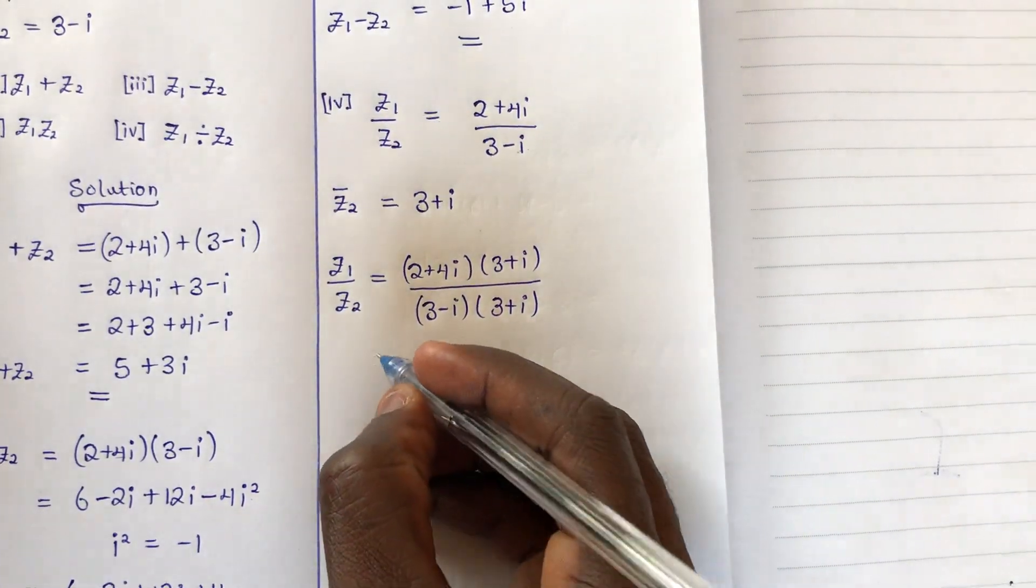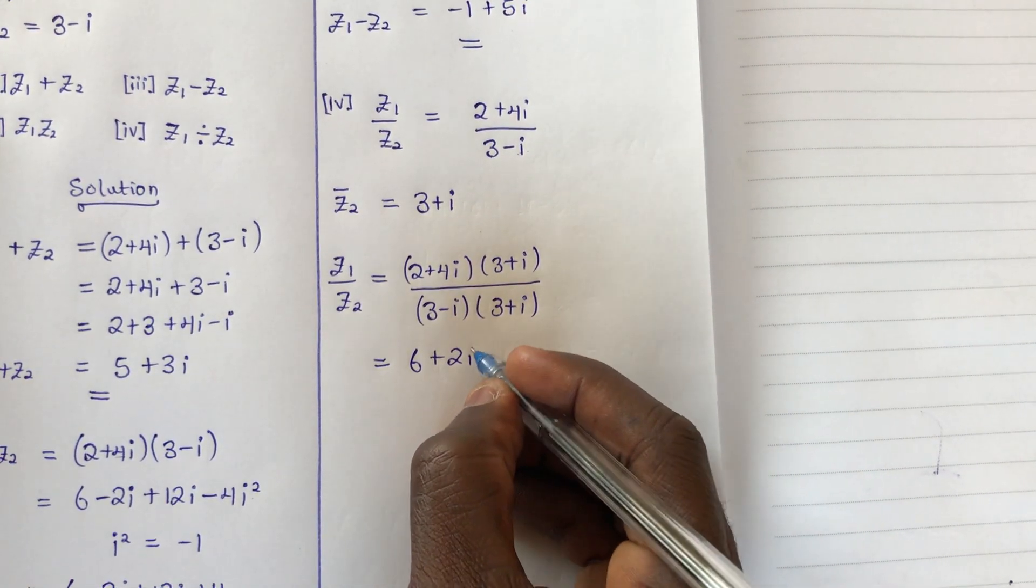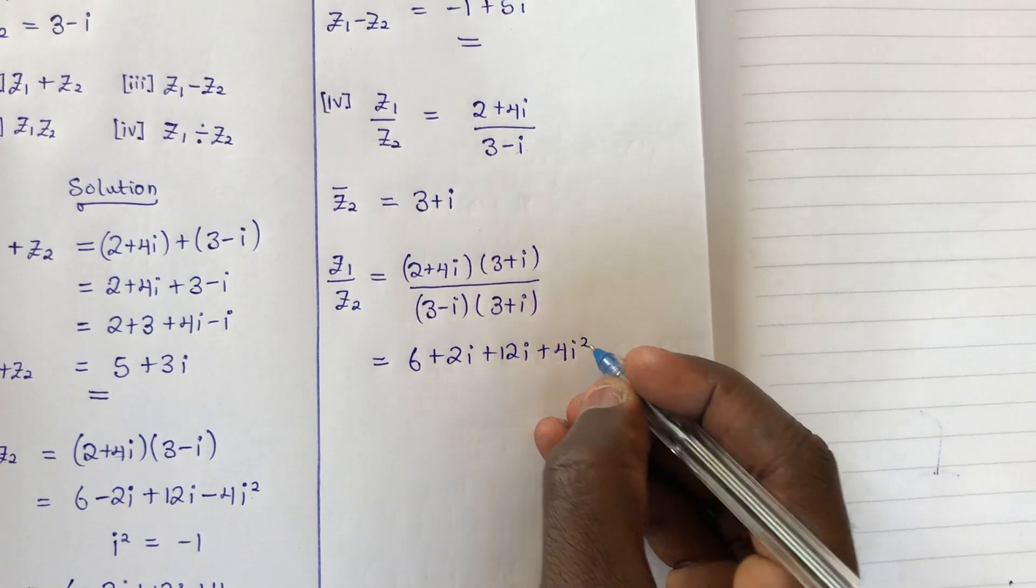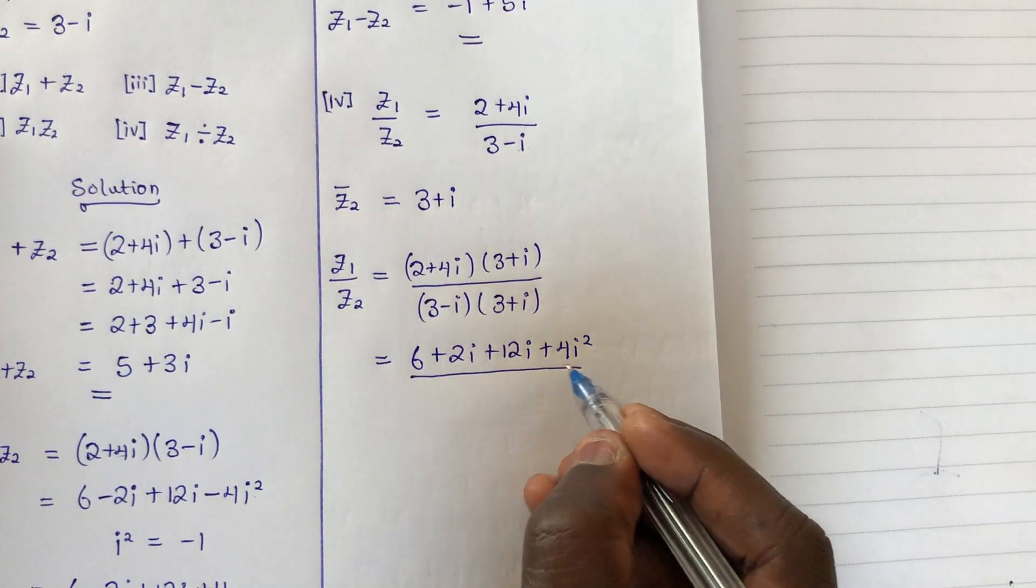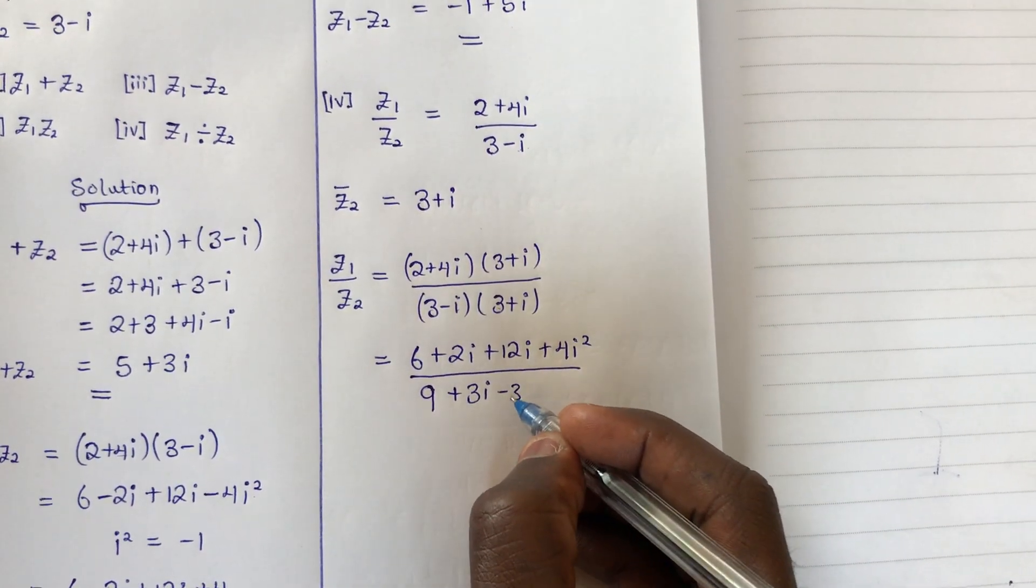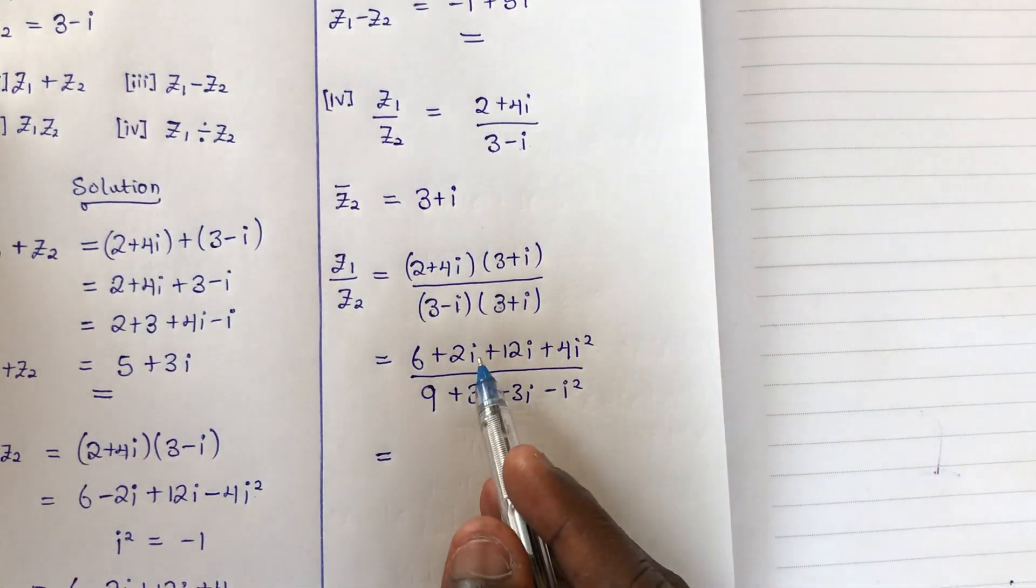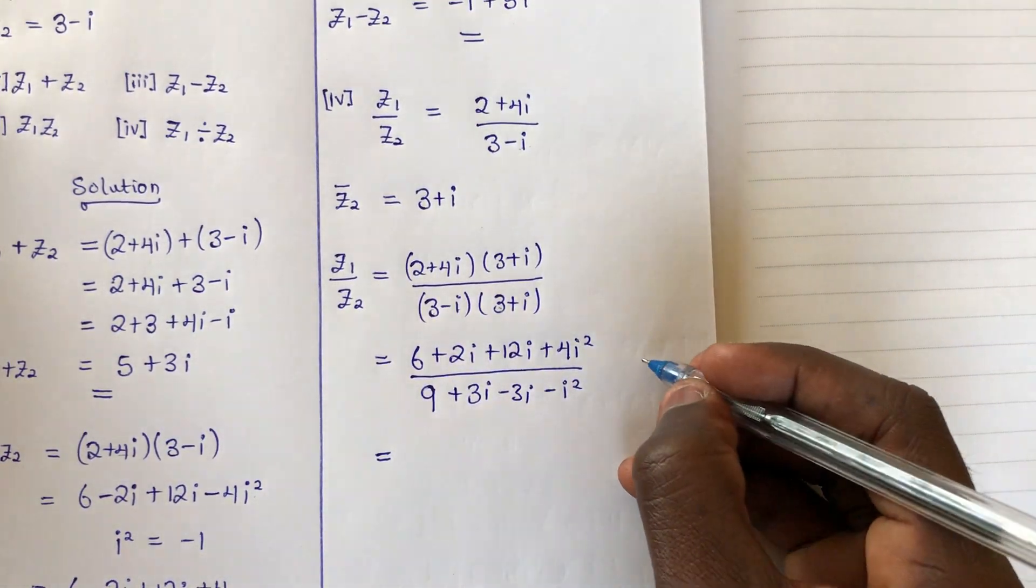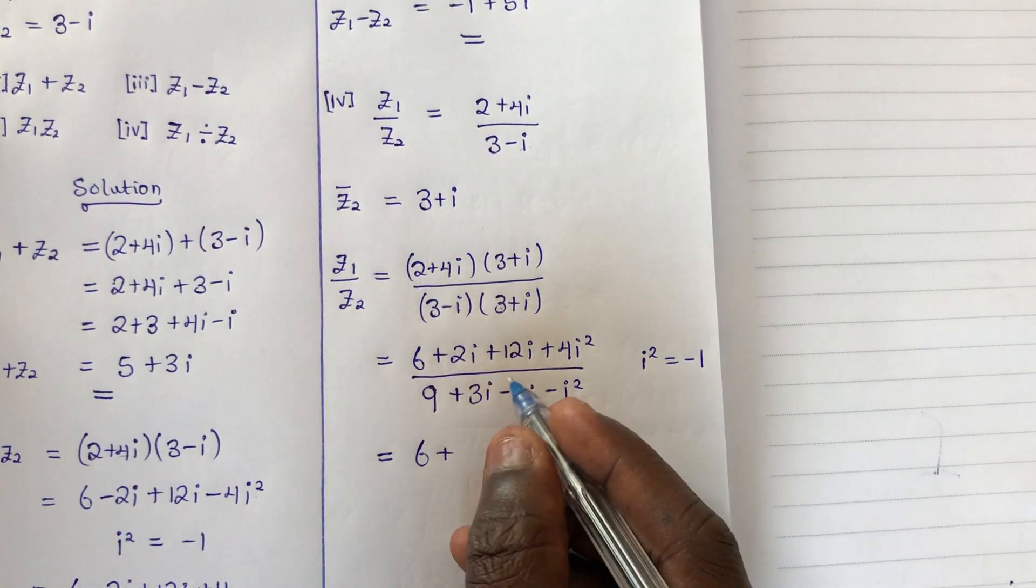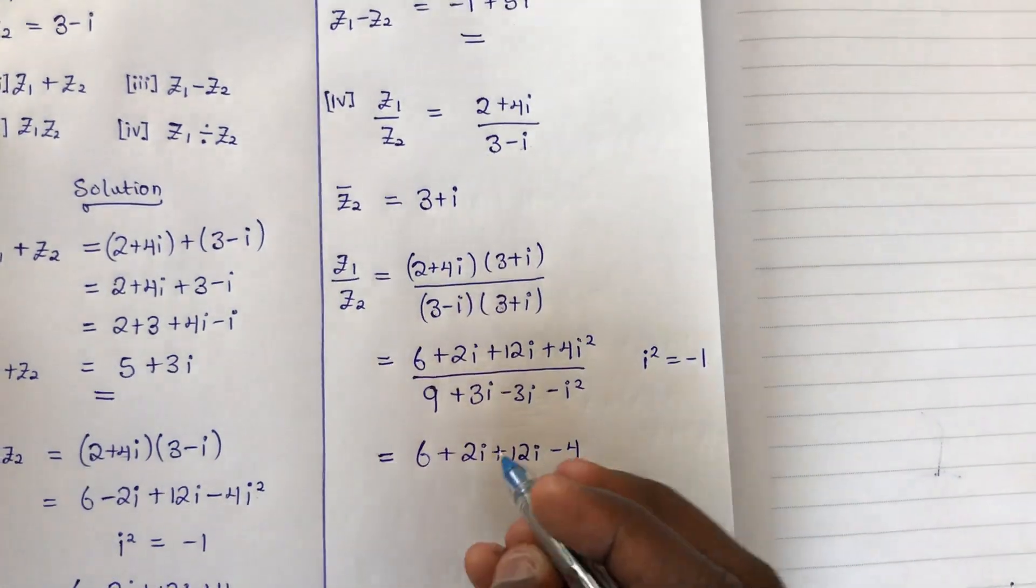Now expand the numerators and denominators. The numerator: 2 × 3 = 6, 2 × i = 2i, 4i × 3 = 12i, 4i × i = 4i². The denominator: 3 × 3 = 9, 3 × i = 3i, -i × 3 = -3i, -i × i = -i².